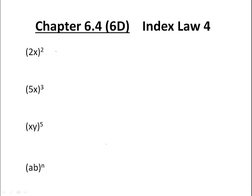When we square something, we multiply it by itself. So in expanded form, 2x all squared would be 2x times 2x. If we were to write this in index form, 2 times 2 would be 2 squared, and x times x would be x squared. We can see that the power of 2 that was originally outside the bracket applies to both the 2 and the x that were inside the bracket.